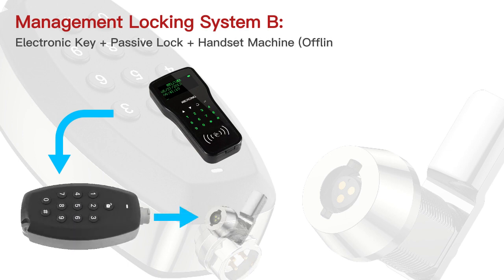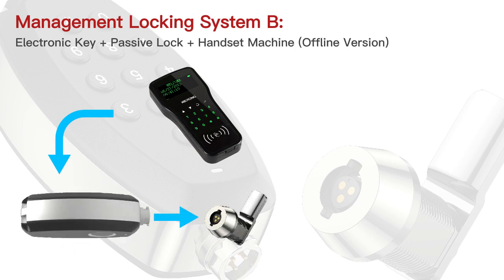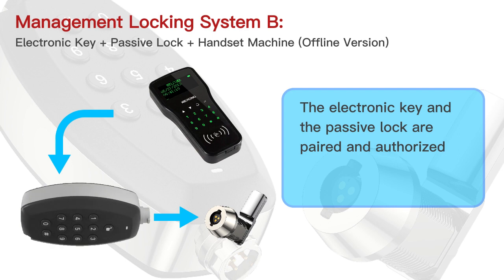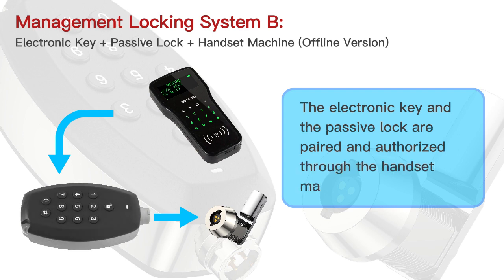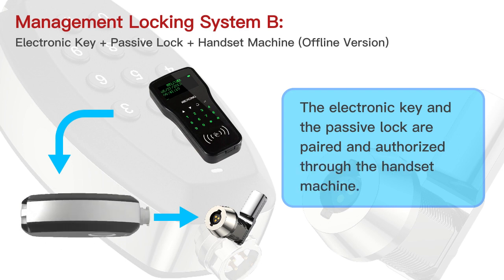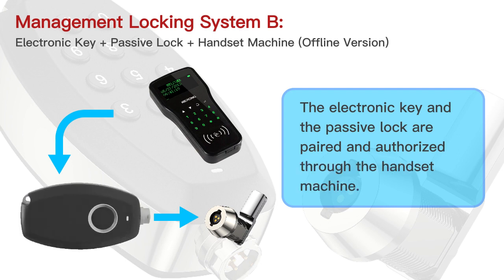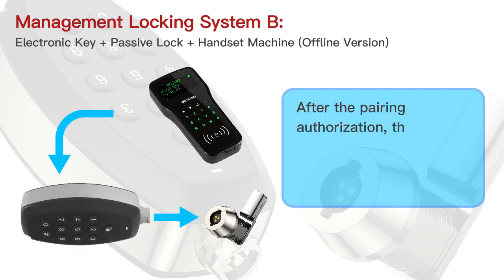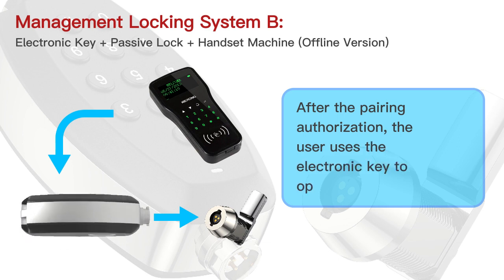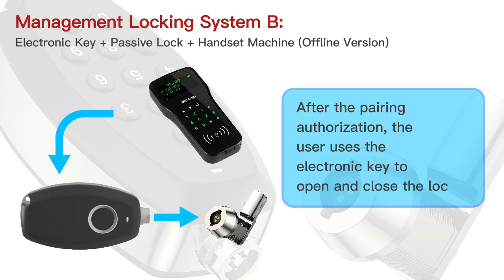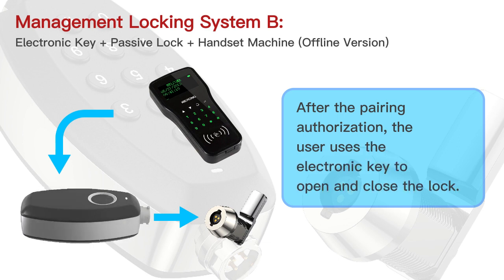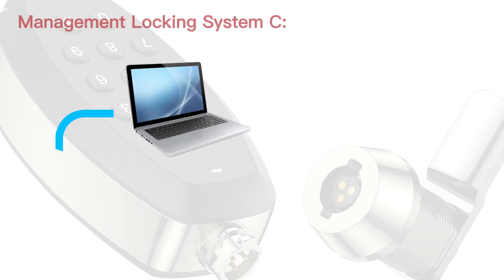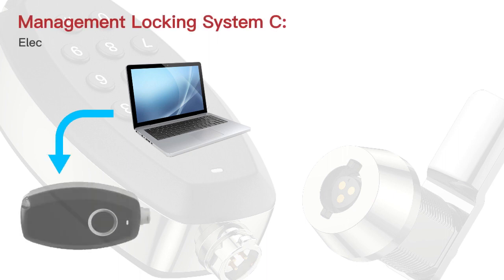Management locking system B: electronic key plus passive lock plus handset machine, offline version. The electronic key and the passive lock are paired and authorized through the handset machine. After pairing authorization, the user uses the electronic key to open and close the lock.